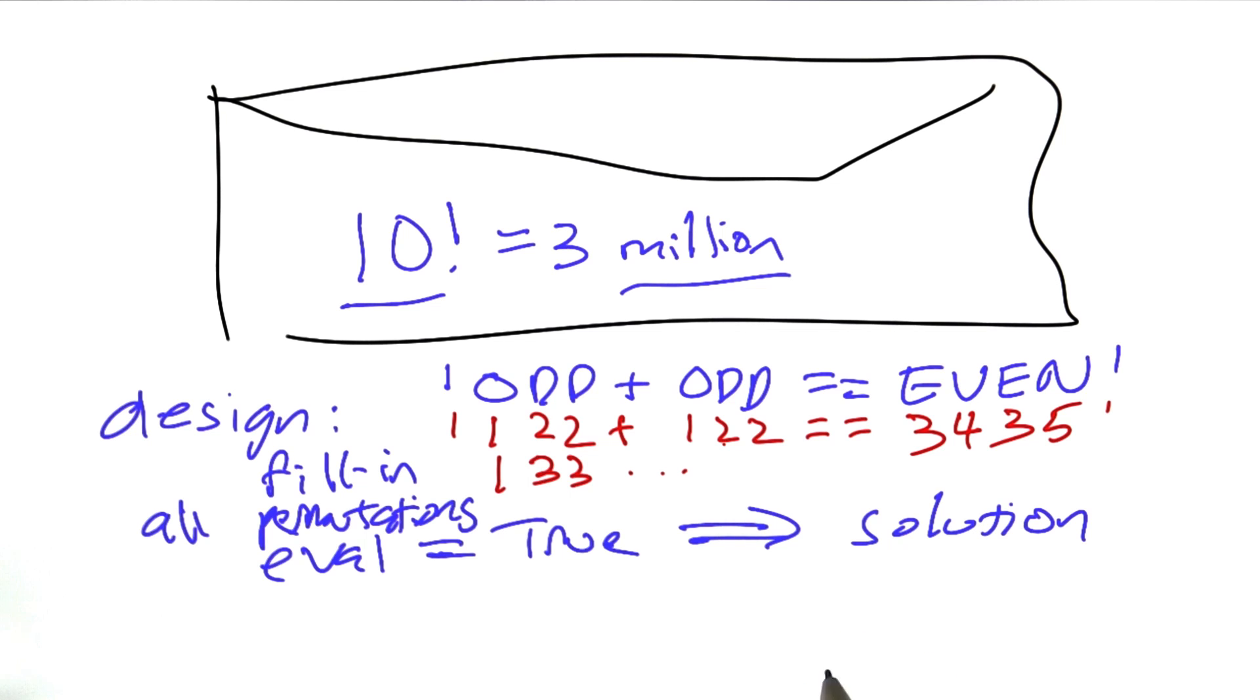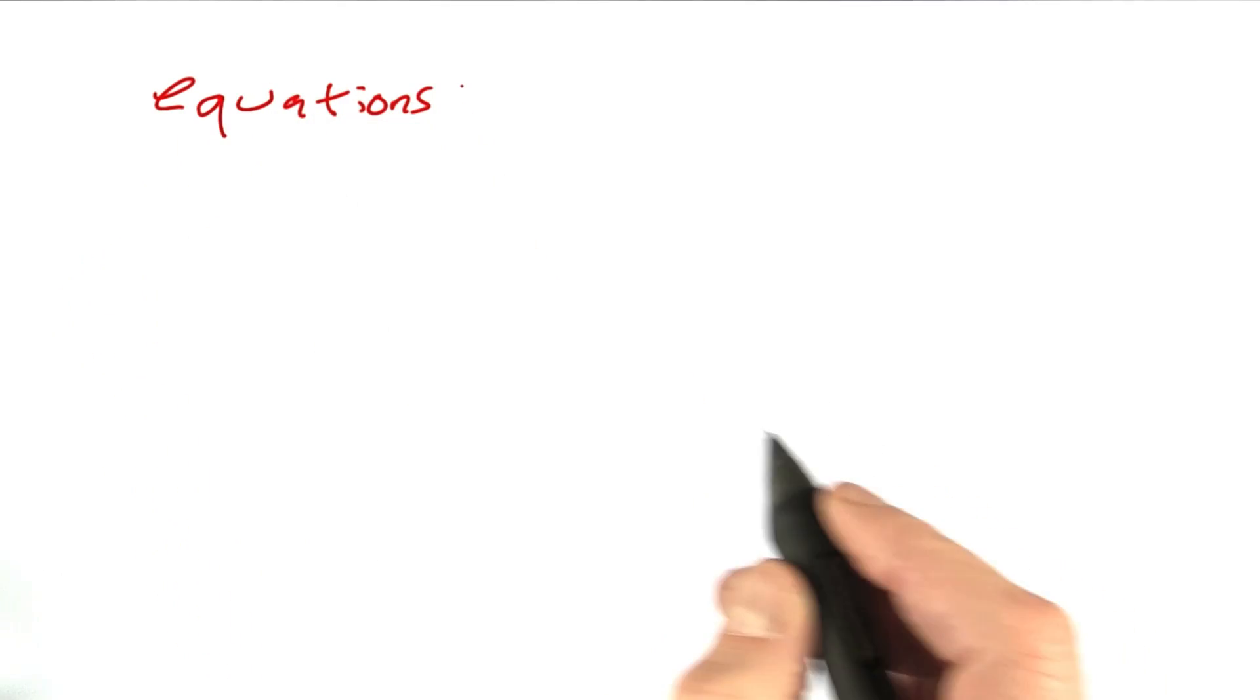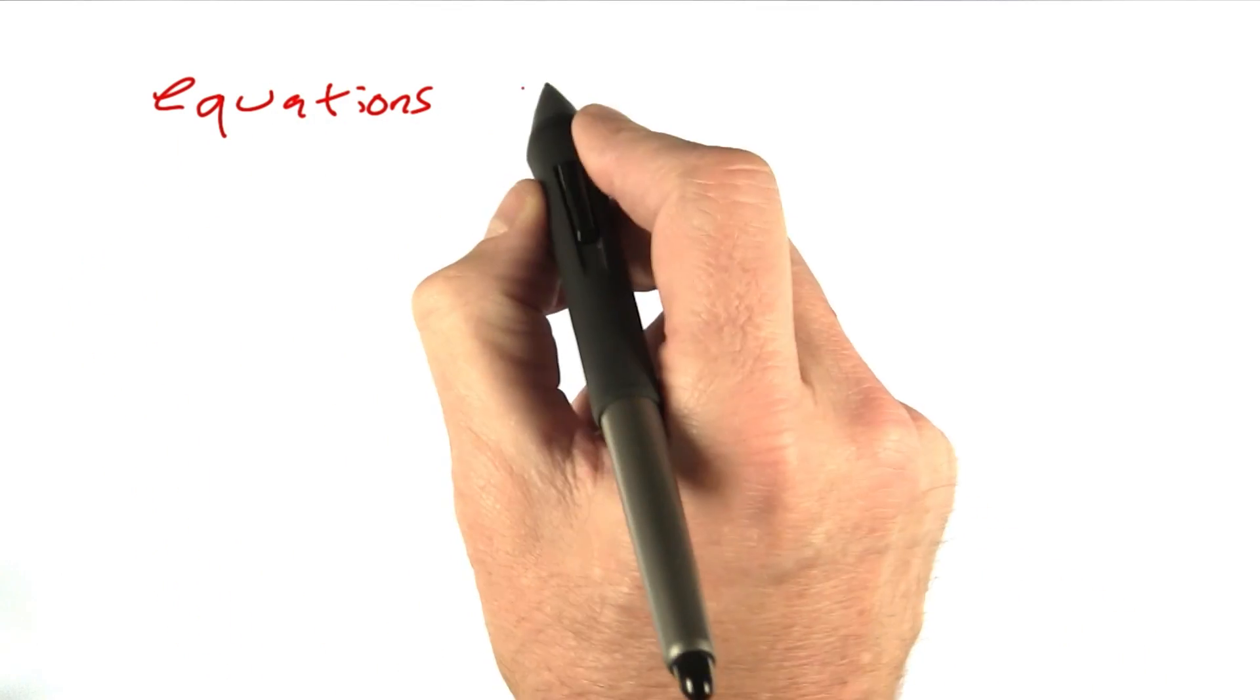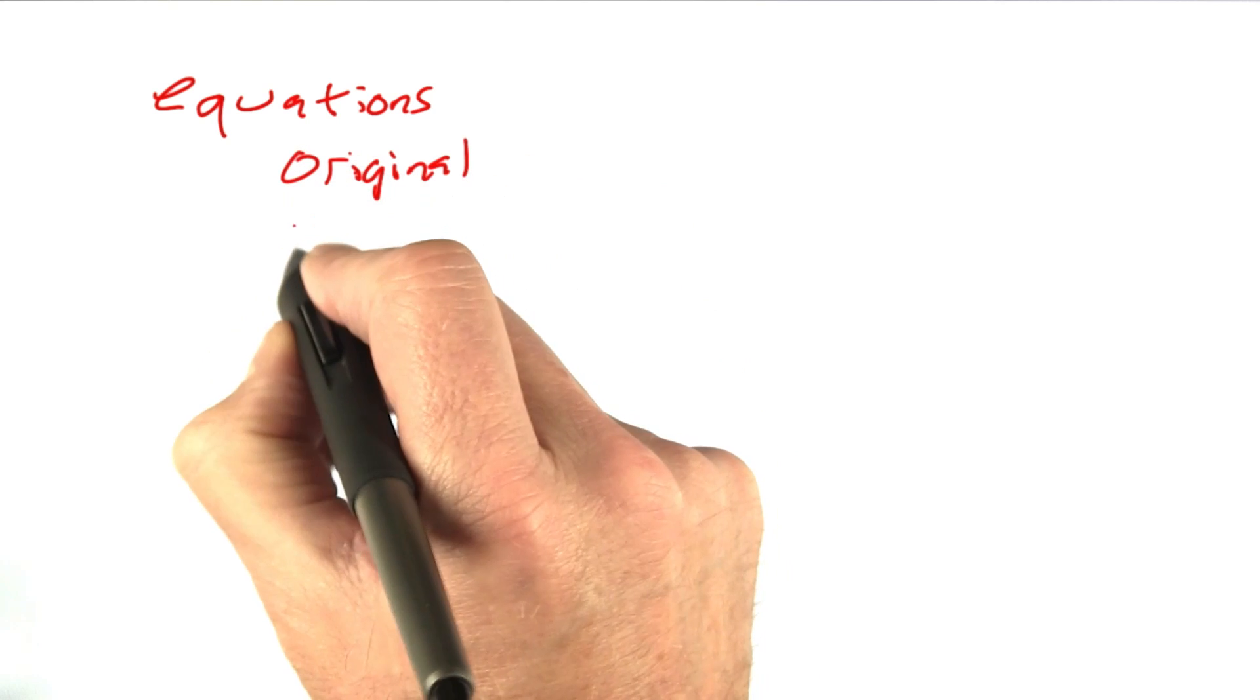Now, let's take an inventory of all the concepts we're going to need. First, we have equations. And there's two types of those, the original and the filled in.